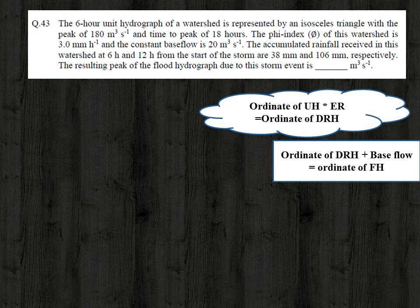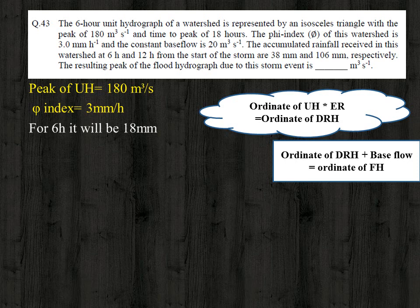We need to find the effective rainfall, for which the phi index is given. The phi index is the infiltration rate: rainfall minus runoff divided by total time, given as 3 mm/hour. For a six-hour unit hydrograph, the phi index loss per period is 6 × 3 = 18 millimeter.